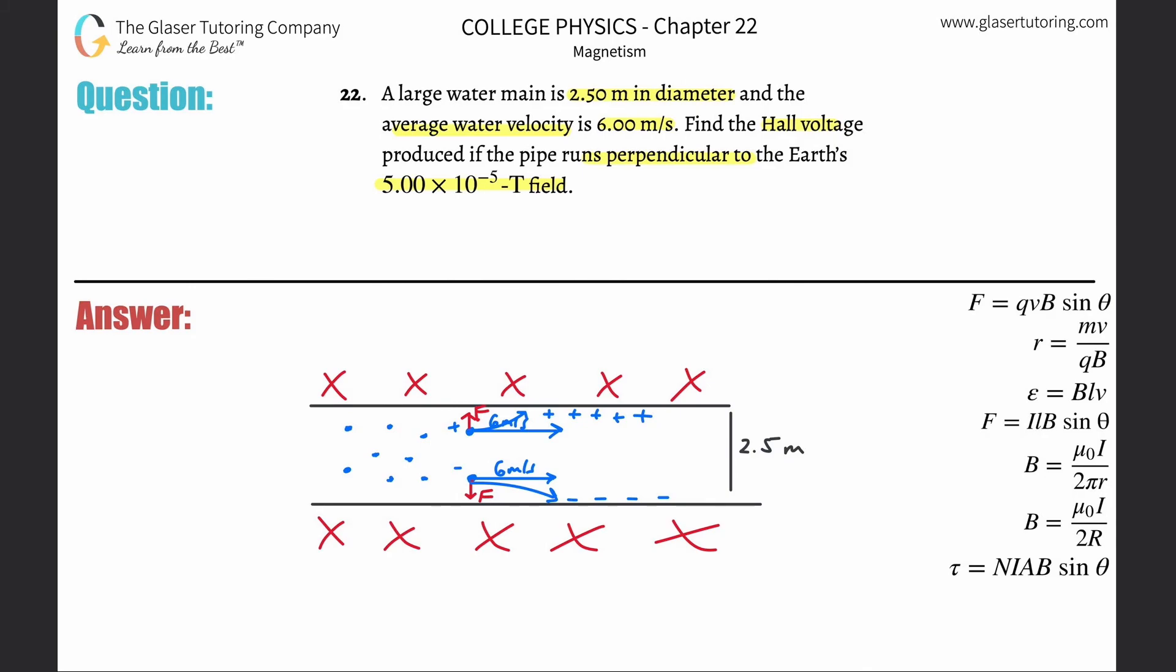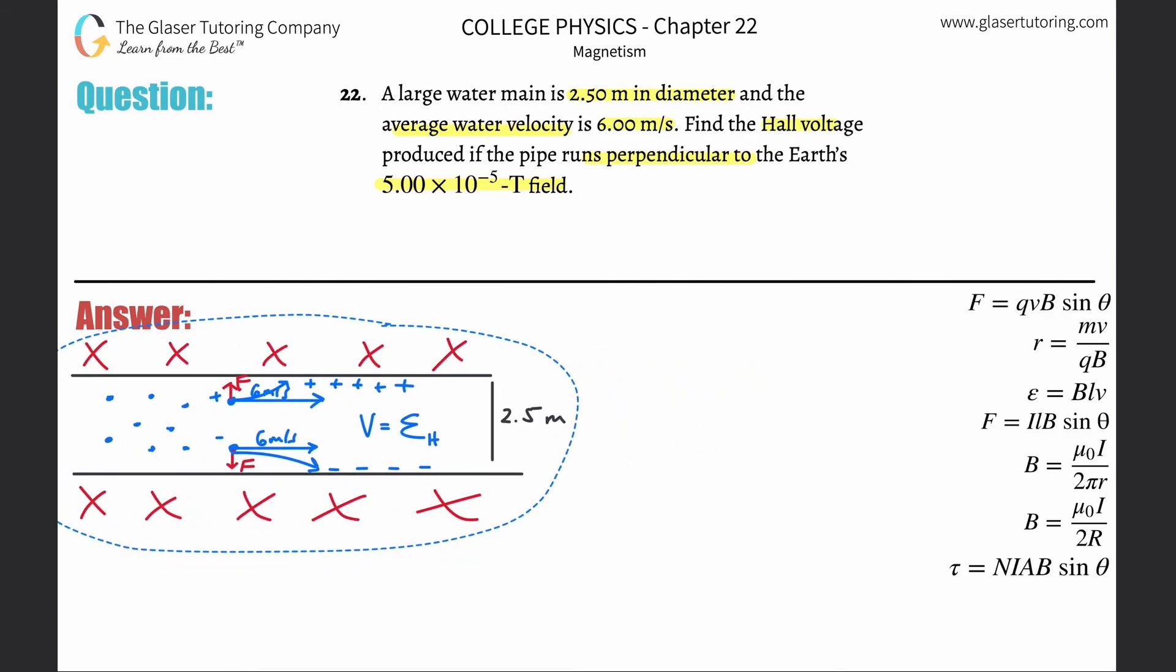So the voltage is created now. Since a voltage is created, guess what that voltage is called? It's called the Hall voltage, this script E sub H. I'll call it the Hall voltage. So it turns out that in order to identify what the Hall voltage is, we have a formula.